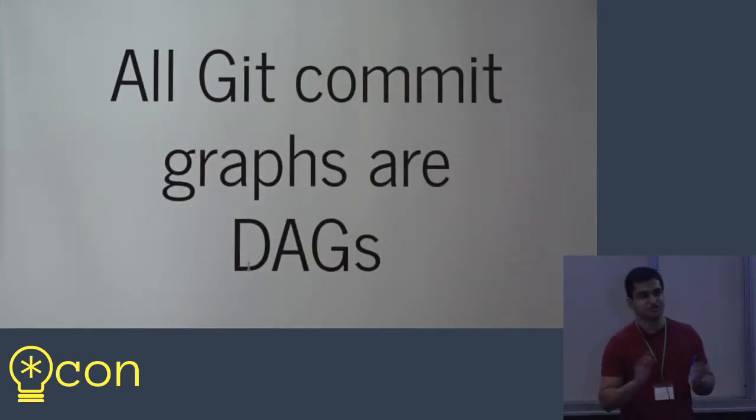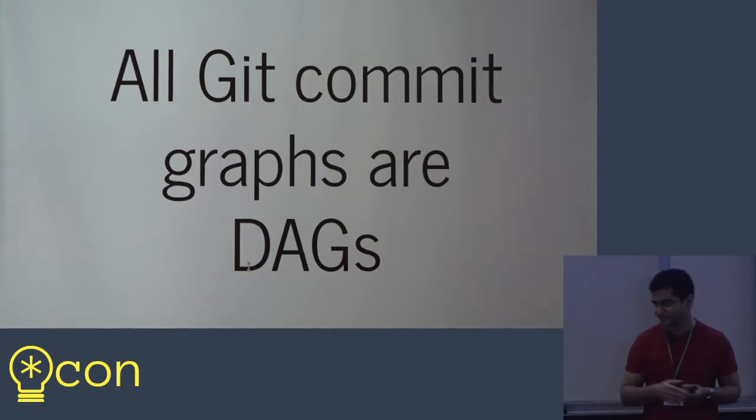So one thing that you should know is that all Git commit graphs are directed acyclic graphs. So what's a directed acyclic graph? A graph has nodes and edges, like vertices and edges. And a directed graph is a graph where the edges point in a certain direction as opposed to an undirected graph. And a directed acyclic graph is a directed graph with no cycles.